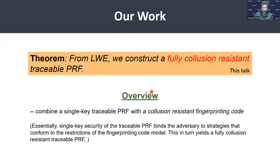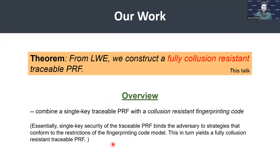Here is a quick overview. What we do is combine a single-key traceable PRF with a collusion-resistant fingerprinting code. Essentially, single-key security of the traceable PRF binds the adversary to strategies that conform to the restrictions of the fingerprinting code model. This, in turn, yields a fully collusion-resistant traceable PRF.